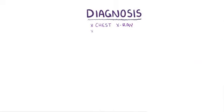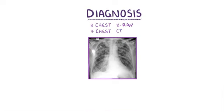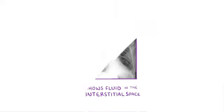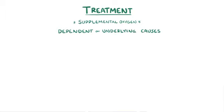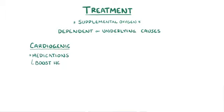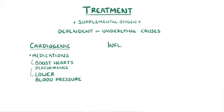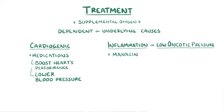The diagnosis of pulmonary edema is usually made with a chest x-ray or chest CT scan that shows fluid in the interstitial space. Treatment typically involves giving supplemental oxygen. Other treatments are dependent on the underlying cause: if the cause is cardiogenic, medications aimed at boosting the heart's performance or lowering blood pressure can be helpful. If the cause is related to inflammation or low oncotic pressure, managing that illness will help resolve the pulmonary edema.